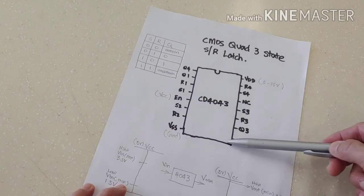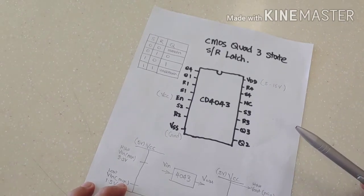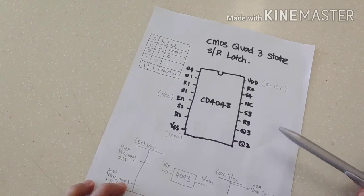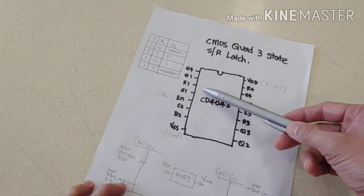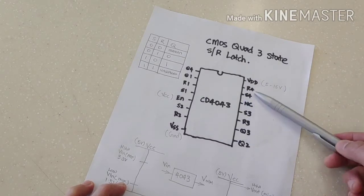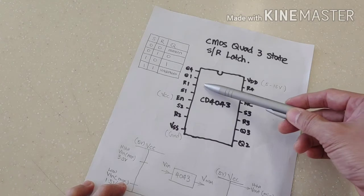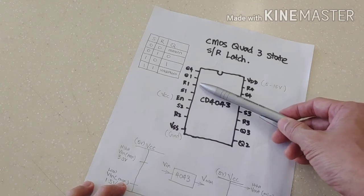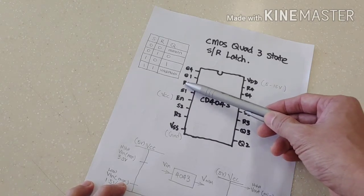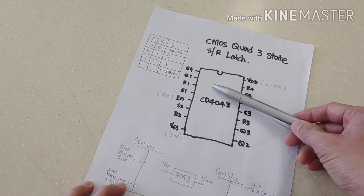These are the pin-outs. You can actually get this diagram from Google. Just search 4043 datasheet and you'll be able to get this picture. There are four SR latches in this one chip.